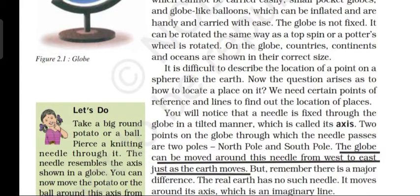It is difficult to describe the location of a point on a sphere like earth. The question arises: how do we locate a place on it? We need certain points of reference and lines to find out the location of places. Without any reference point or important lines it would be very difficult. Such important lines include the axis, equator, latitude and longitude, and all of these help us in locating places on earth.